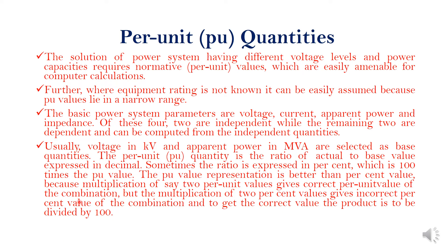The per-unit quantity is the ratio of the actual value to the base value, always expressed as a decimal. The value ranges from 0.something up to 1, so the maximum value is 1 for per unit. Sometimes the ratio is expressed as a percentage, which is 100 times the per-unit value. The per-unit representation is better than the percentage value because multiplication of two per-unit values gives the correct per-unit value of the combination, whereas multiplication of two percentage values gives an incorrect percentage value.